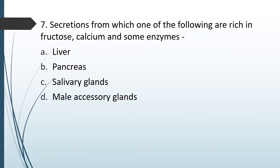Question No. 57: Secretions from which of the following are rich in fructose, calcium and some enzymes? The correct answer is Option D — the male accessory glands.